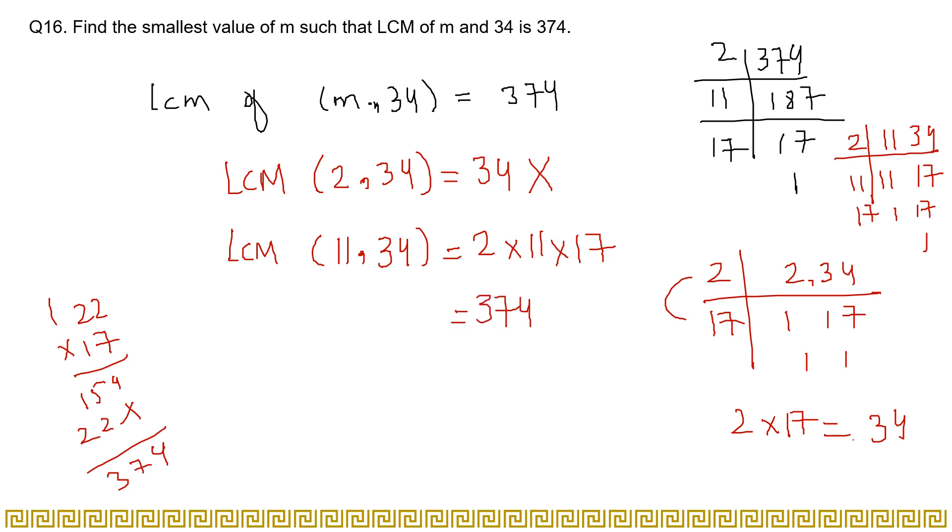This is giving us 374, which is exactly the same as in the question. That is, we have to find the value m which gives us the LCM with 34 as 374. And that is 11. Why 11? Because when we found the LCM for 11 and 34, it gave us 374. That means 11 is the required answer.